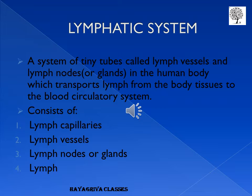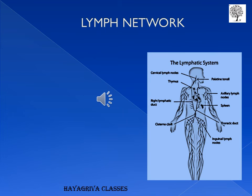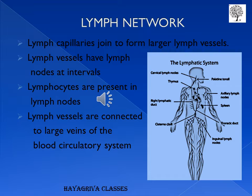The lymphatic system consists of lymph capillaries, lymph vessels, lymph nodes or glands, and lymph — the fluid itself. As you can see in the picture, the lymphatic network covers the whole body. Lymph capillaries join and form larger lymph vessels. Lymph vessels have nodes at regular intervals, and lymphocytes are present in the lymph nodes.